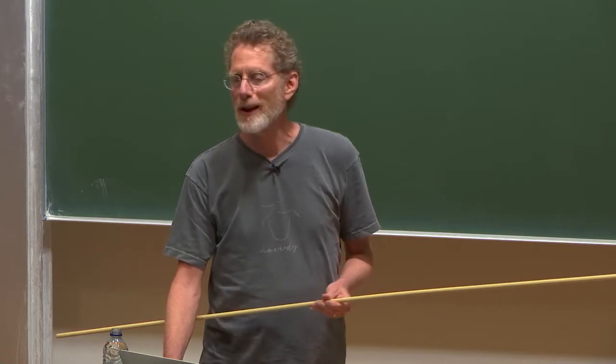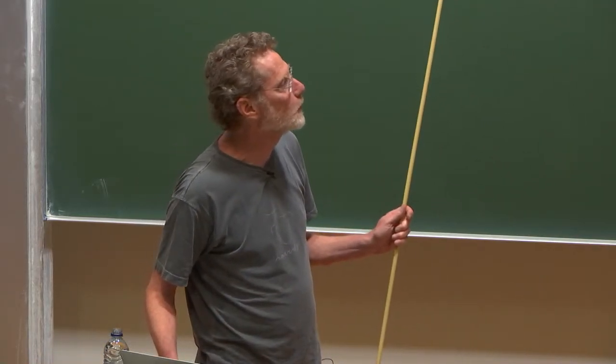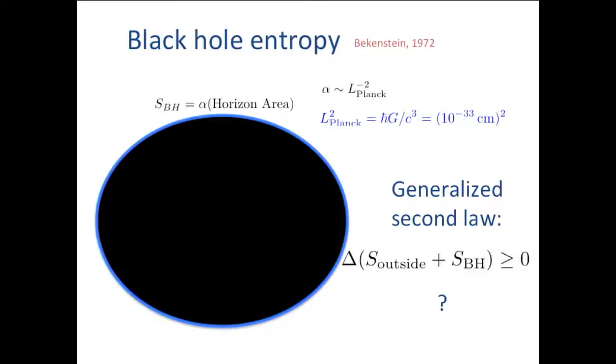He might have thought it should be determined by the mass of the black hole, but that wouldn't be additive if you had, say, two black holes, but the surface areas would be additive. And also, he had the area theorem from Hawking, which was blatantly analogous to entropy. So he hypothesized that the black hole has an entropy proportional to its horizon area.